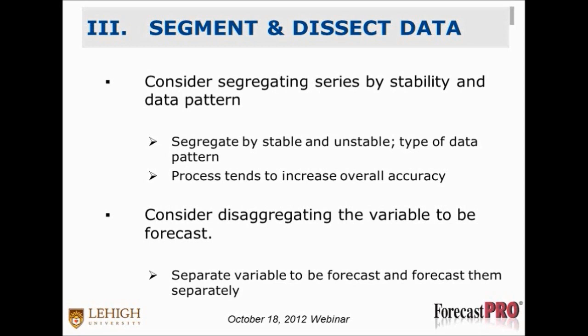Another approach is to consider segregating series by stability and data pattern. Since some patterns are easier to forecast than others, you could segregate stable vs. unstable and then, say, trend versus seasonality. This kind of segregation tends to improve overall accuracy. The trend in forecasting right now is finding clever ways to segment and dissect data — how can we be smarter and use our ingenuity in a very effective way? That way is through segmentation.